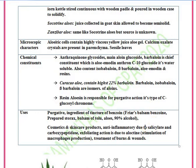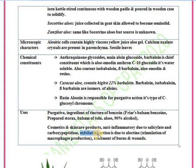Aloe is used as a purgative, as an ingredient of tincture of benzoin and Friar's balsam. It is used in cosmetics and skincare products. It has anti-inflammatory action and exfoliating action. Exfoliating action is the regeneration of the skin. The chemical constituent aloctin stimulates macrophage production.